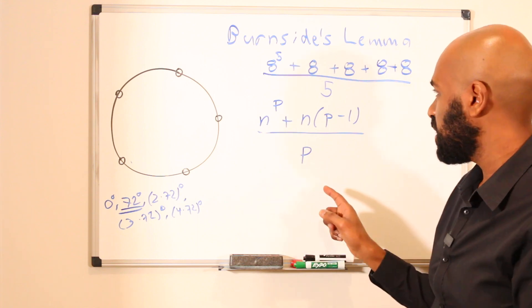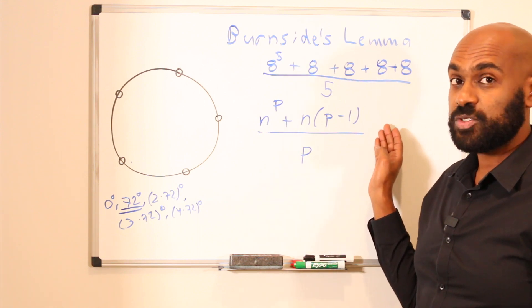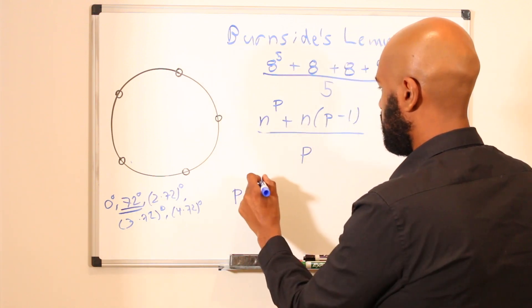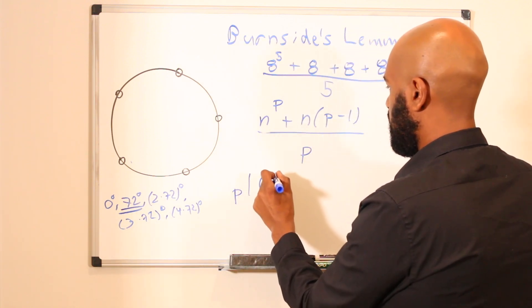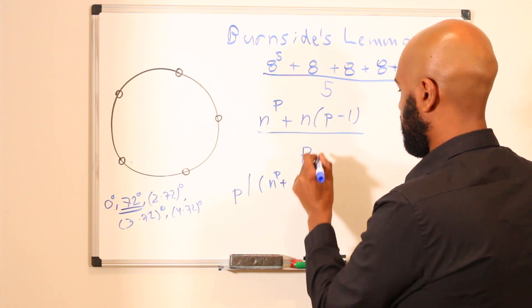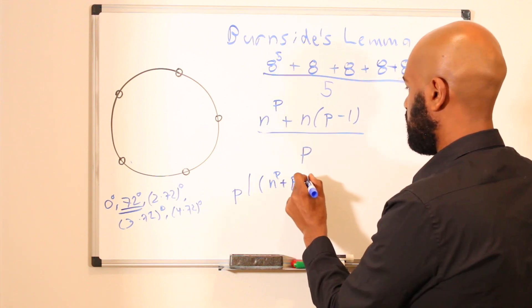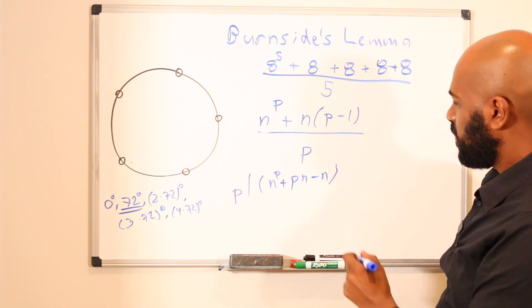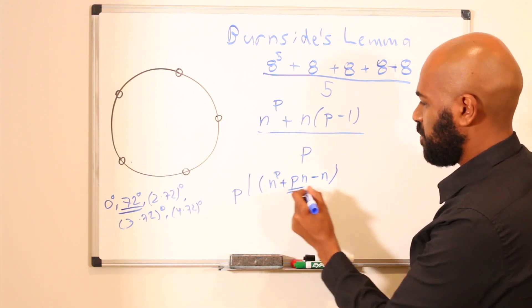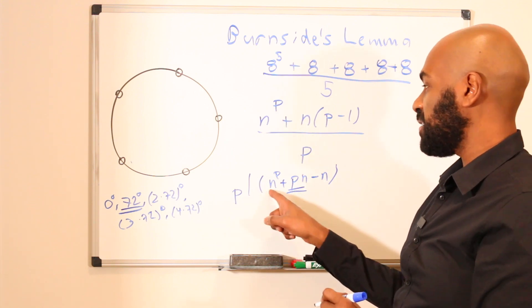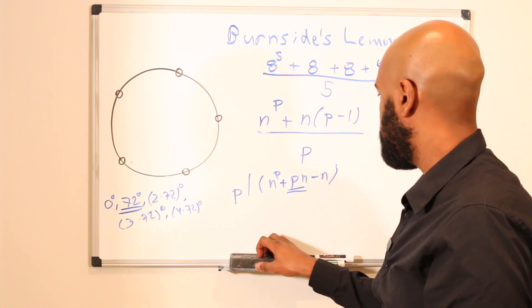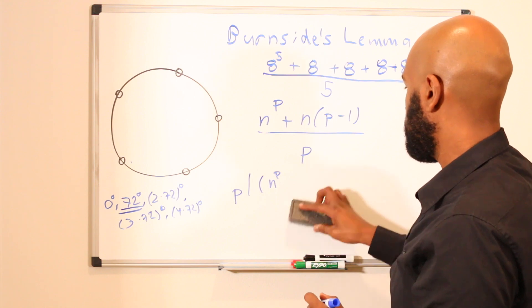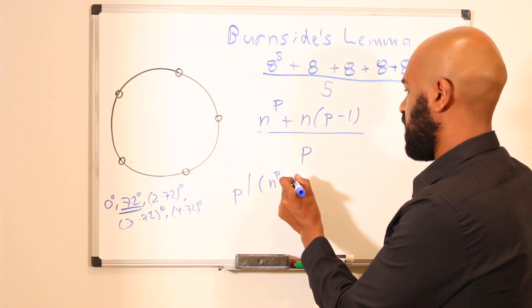So there's something actually really interesting about this. This has to be an integer because it's actually counting something. So that means that p divides the quantity in the numerator, n to the p plus, and I'll write it this way, p times n minus n. Okay, p already divides this quantity right here, so if p divides this entire quantity here, p would have to divide this intermediate quantity right here, n to the p minus n.